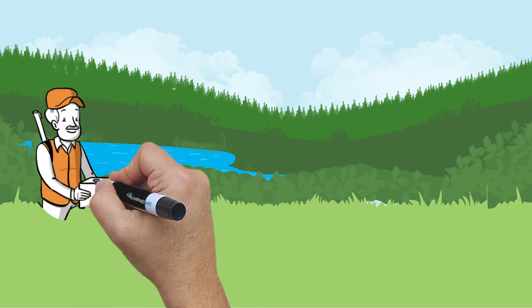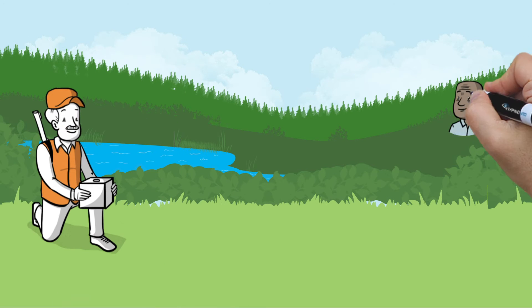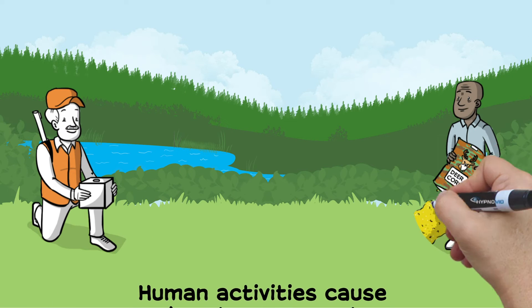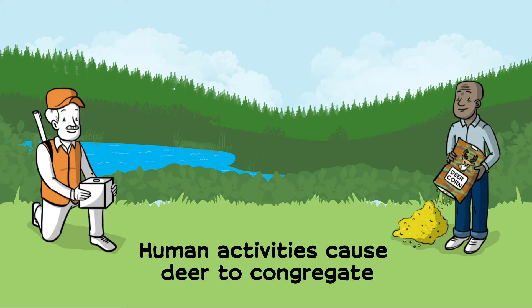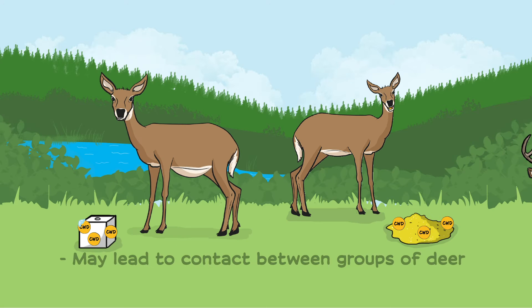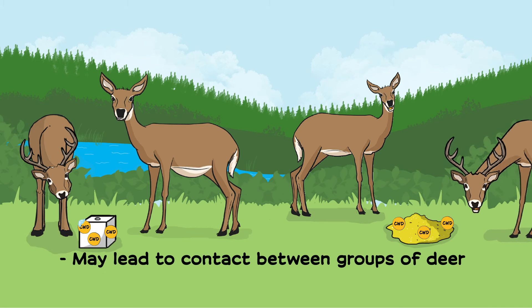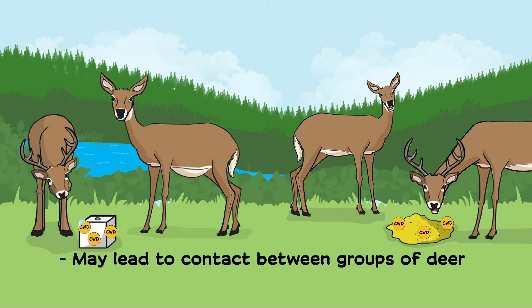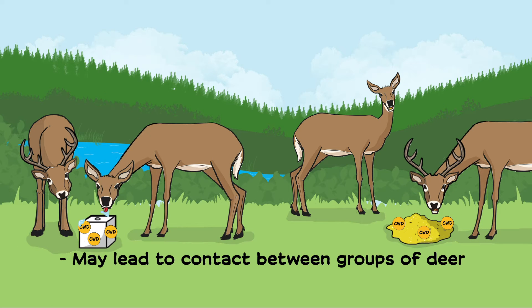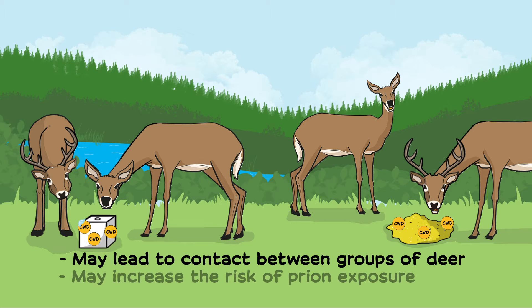Human activities like feeding, baiting, and providing mineral licks cause deer to congregate, which may lead to contact between groups of deer that wouldn't otherwise interact and may increase the risk of prion exposure.